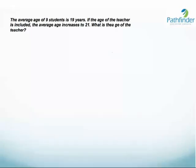This is the same question that we solved initially by the equation method. The average age of 9 students is 19 years. If the age of the teacher is included, the average increases to 21 years. What is the age of the teacher?